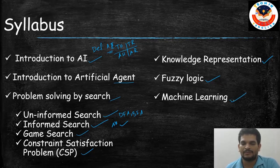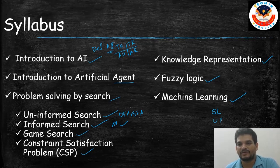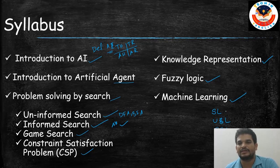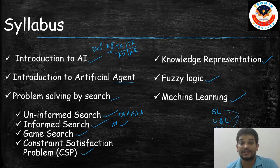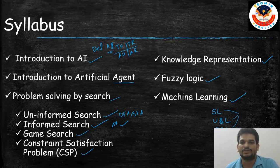Next we have Machine Learning. In machine learning, we will cover supervised learning, unsupervised learning, and reinforcement learning, along with different algorithms — classification algorithms, regression algorithms, and clustering algorithms.